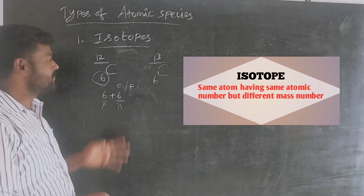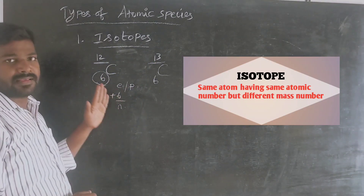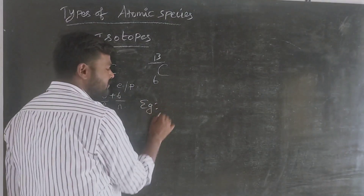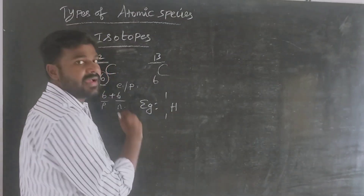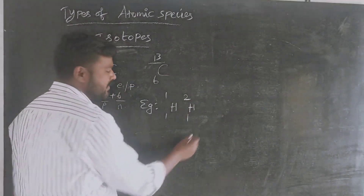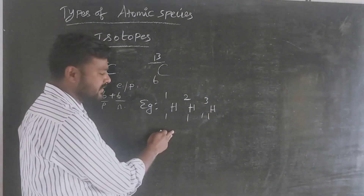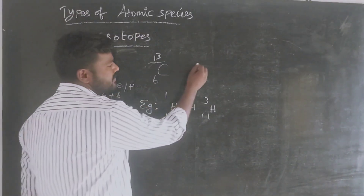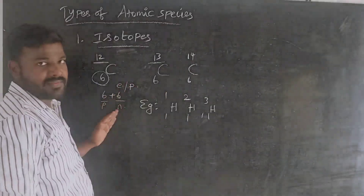By definition, isotopes have the same atomic number but different mass numbers. Examples include hydrogen isotopes: protium, deuterium, and tritium. Carbon also has isotopes such as carbon-14.